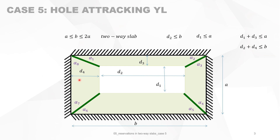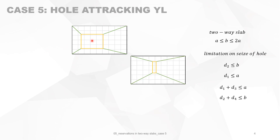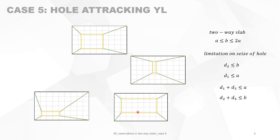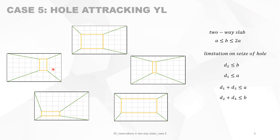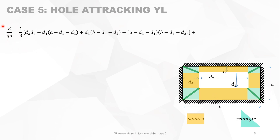All the alphas are a function of D3 and D4. These were the conditions. To give a visual impression: it's a hole somewhere not touching the edges of the slab, and not necessarily centric — this is the case of a non-centric hole attracting yield lines. All the yield lines are attracted by the corners of the hole. So we can divide the whole slab into triangles and rectangles.